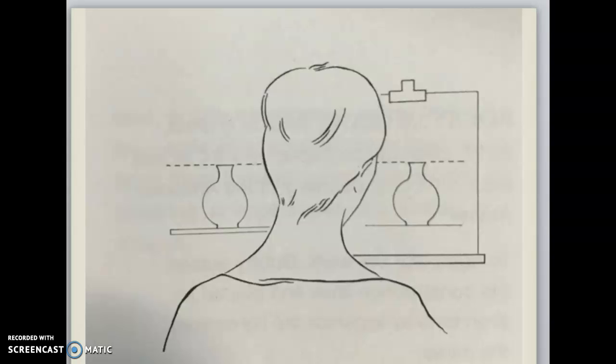With the sight size method, the artist's standing position lies between the still life and her easel. She can look back and forth to compare the two.